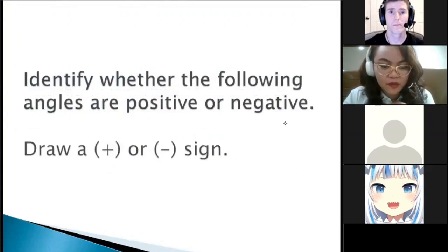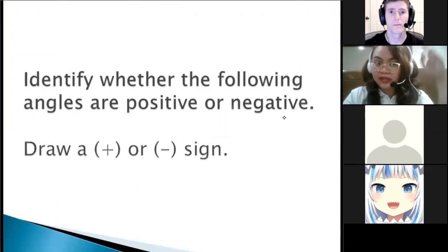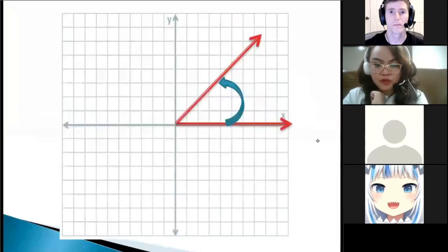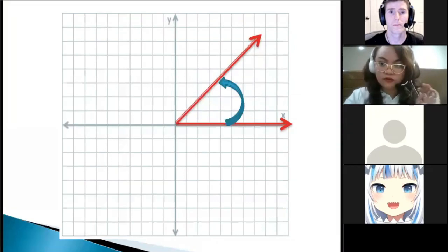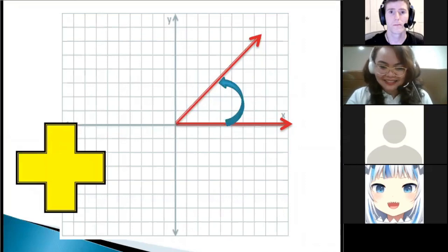Identify whether the following angles are positive or negative. Counter-clockwise starting upward, that's positive. And clockwise downward, that is negative. Alright, just draw a plus sign or minus sign to identify your answer. Again, we are identifying positive and negative angles. 5 items. Item number 1. Is this angle positive or negative? Very good, very good. And the correct answer is positive. Correct, Christoph. Correct, positive. You must be proud of yourself. You're getting the lesson.